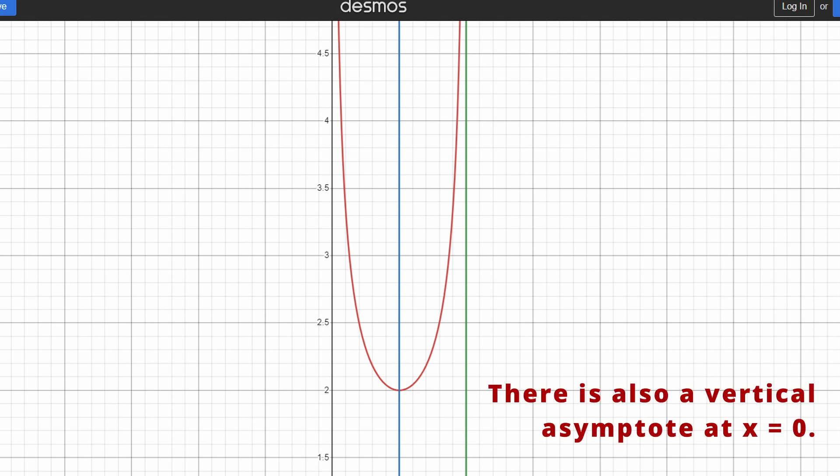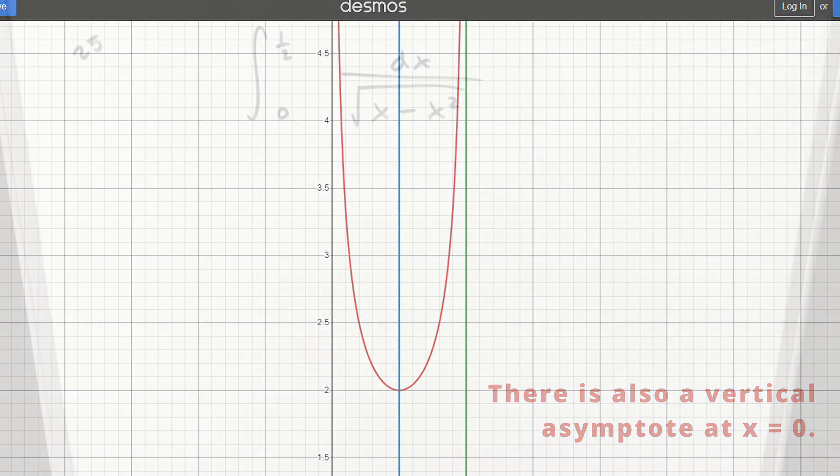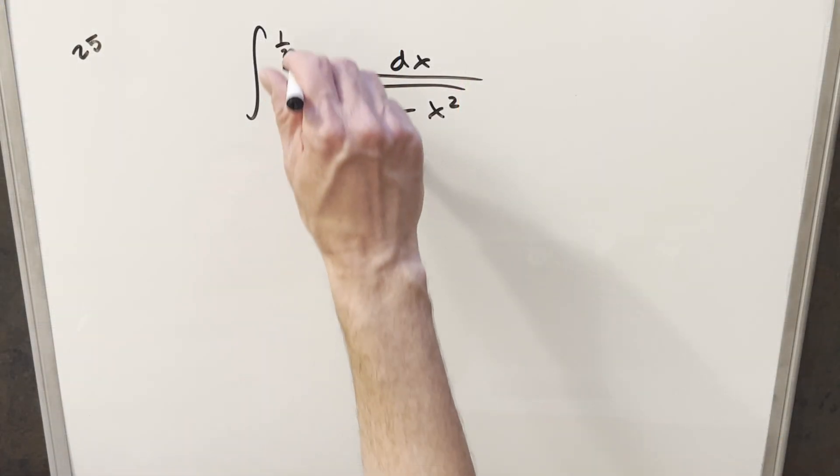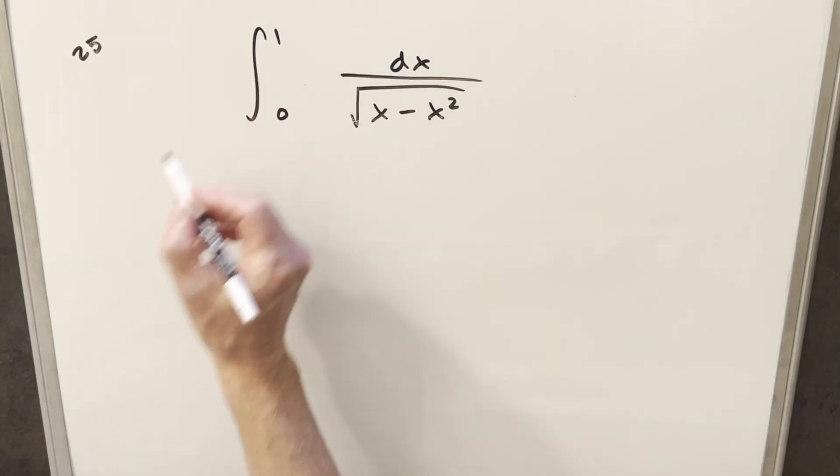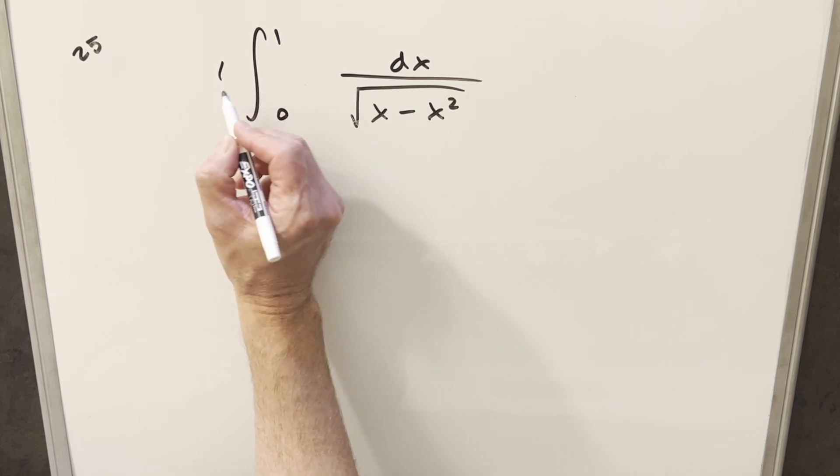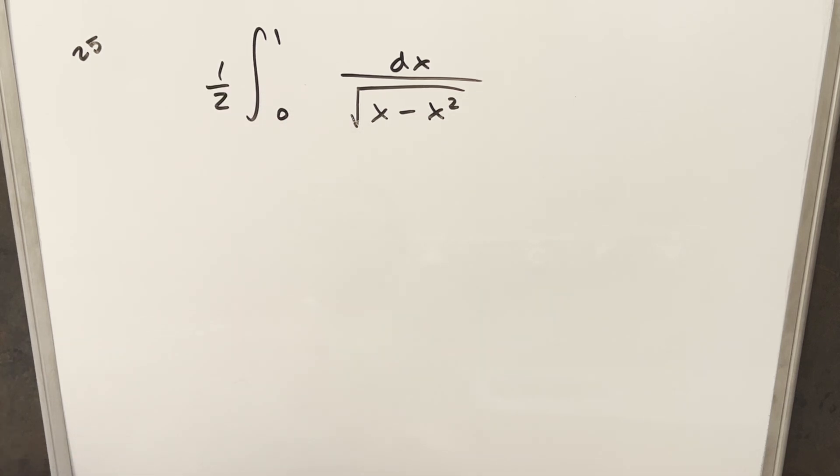So what we can say about this is the area under this curve is going to be the same from 0 to 1 half as it is from 1 half to 1. So using that symmetry, I want to change my integral. Instead of going from 0 to 1 half, I want to look at this as going all the way from 0 to 1. But I want to change it so what we actually have is 1 half of that integral from 0 to 1.